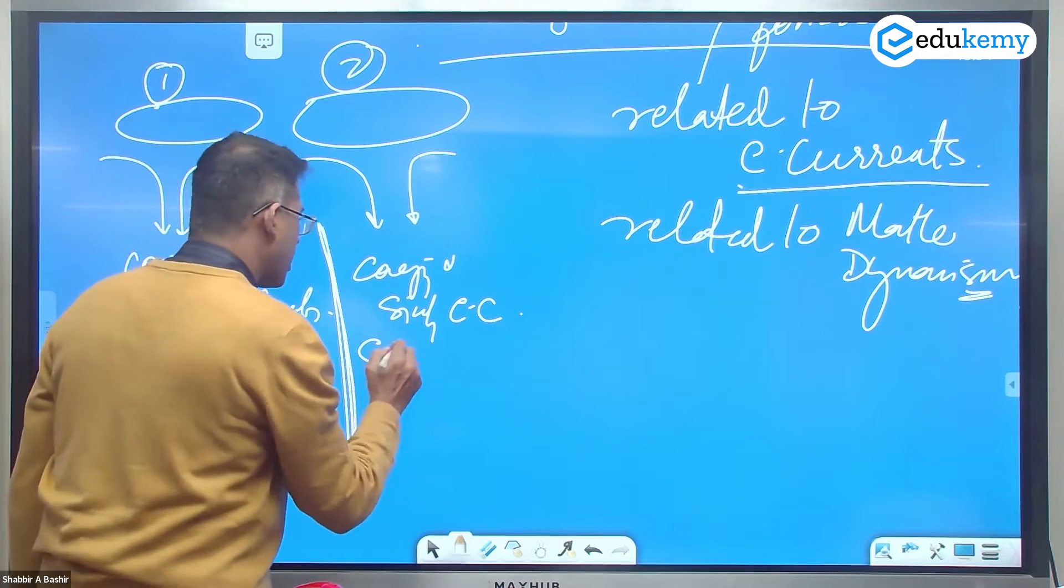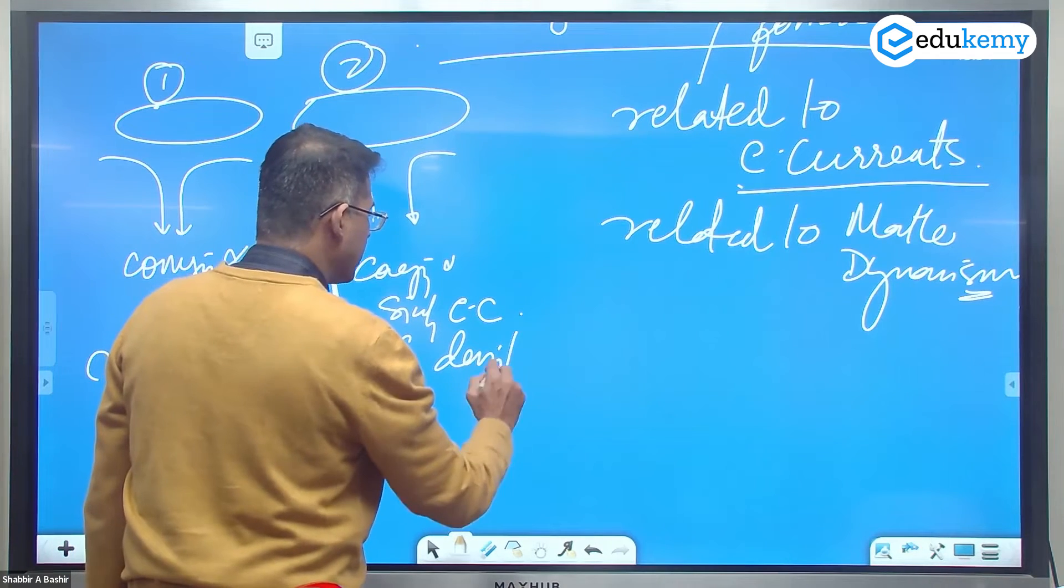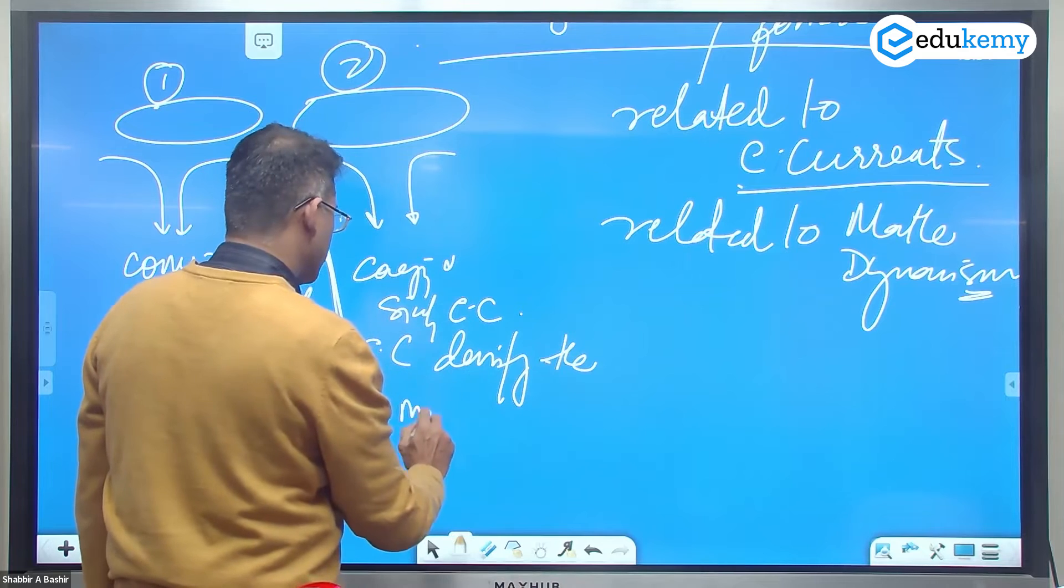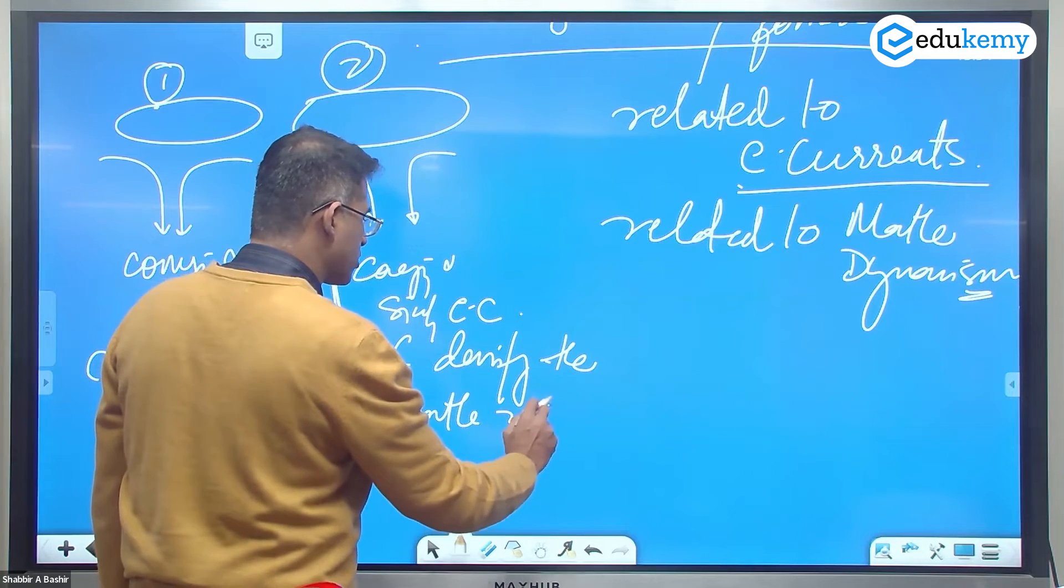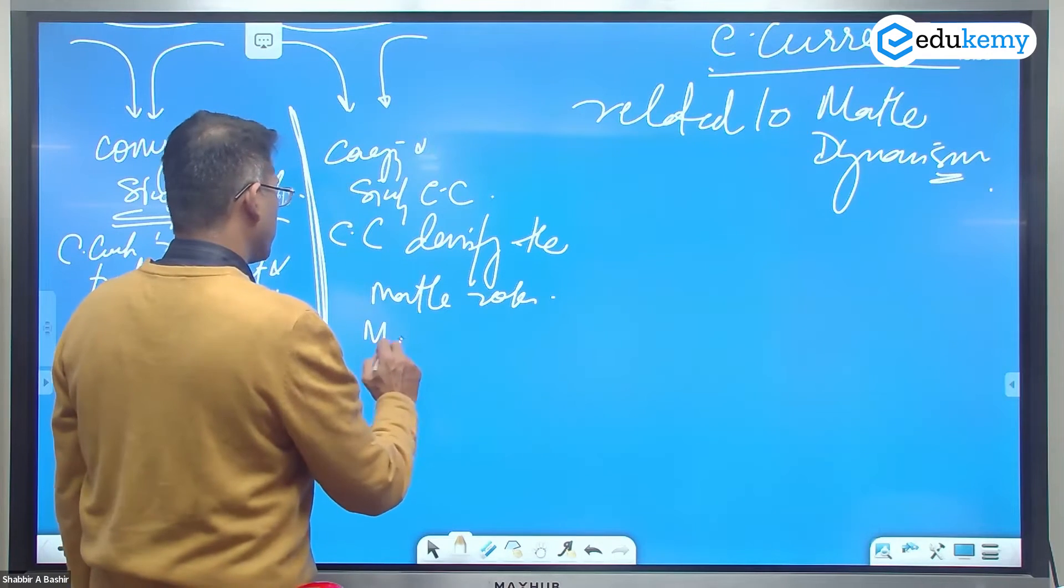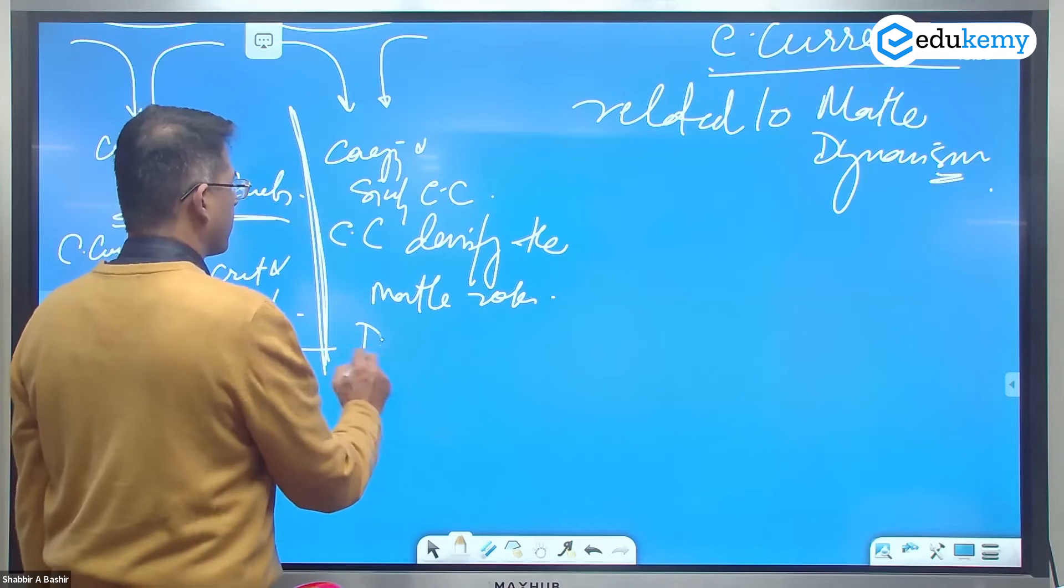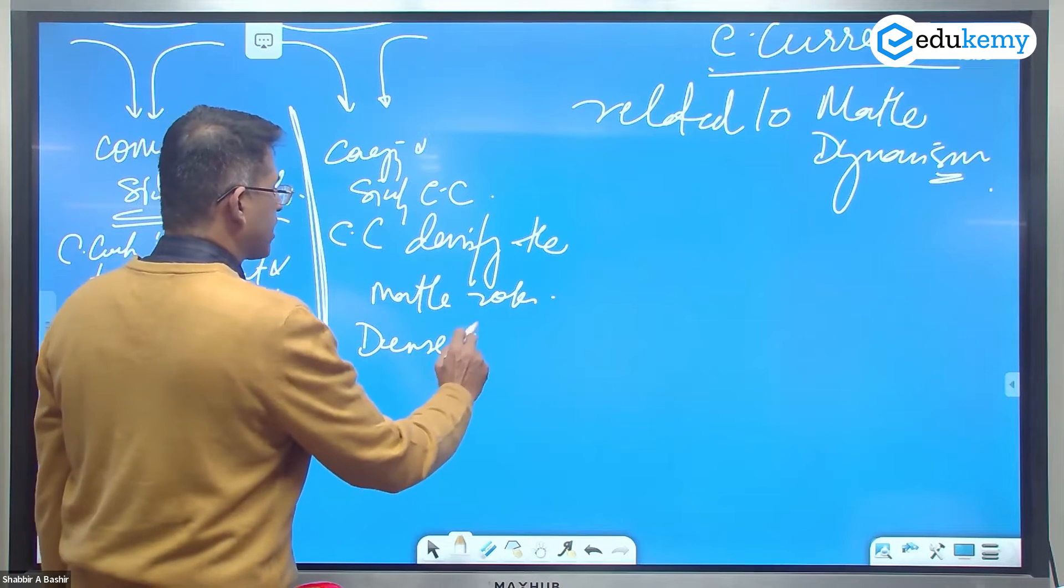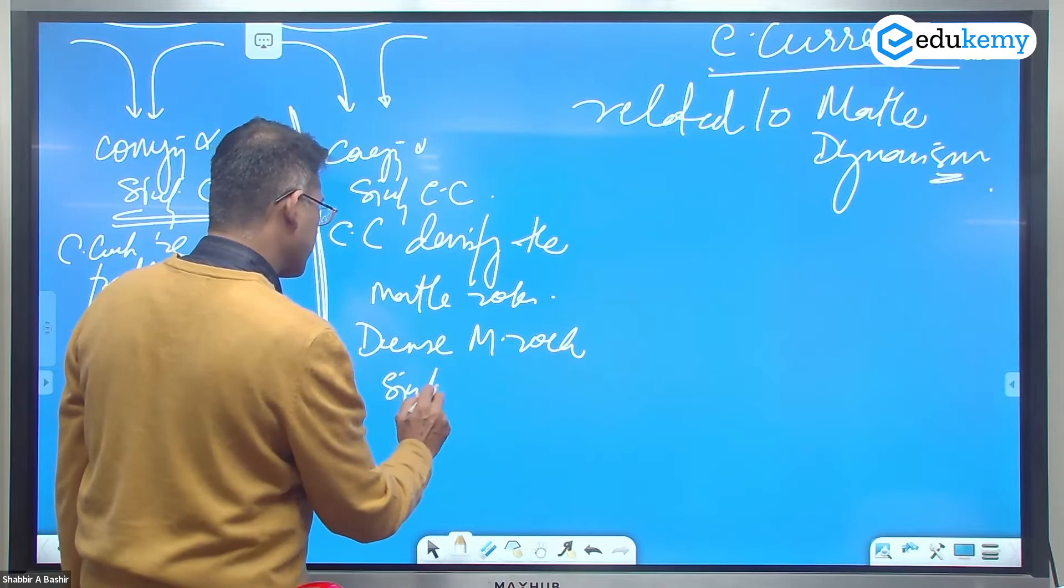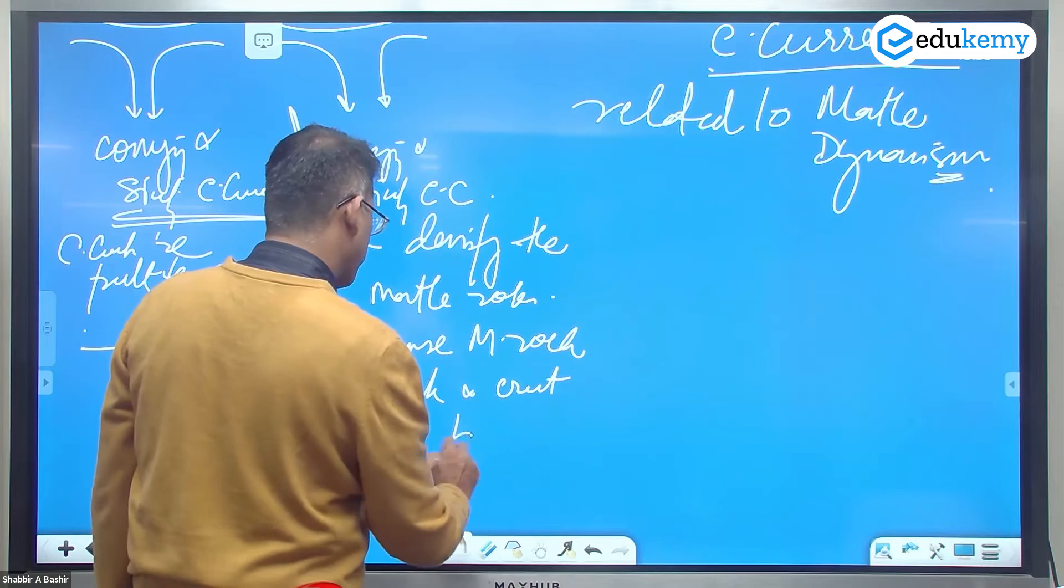The convection currents, they densify the mantle rocks. The dense mantle rocks sink and the crust bends.